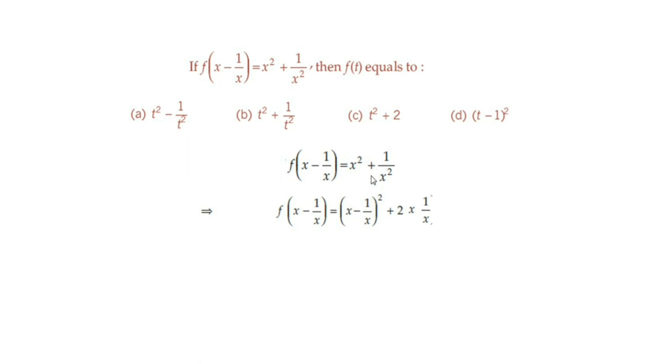We need to express this quantity in terms of x - 1/x. We know that a² + b² = (a - b)² + 2ab. According to this formula, we have (x - 1/x)² + 2 times x times 1/x.